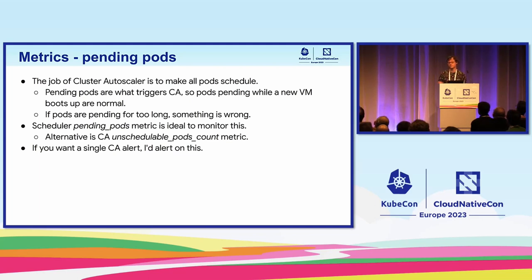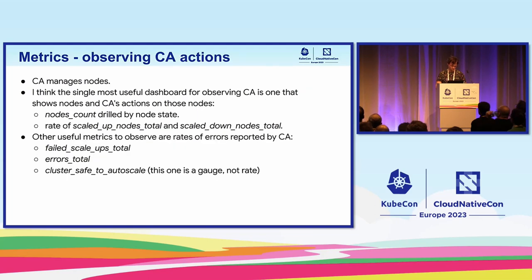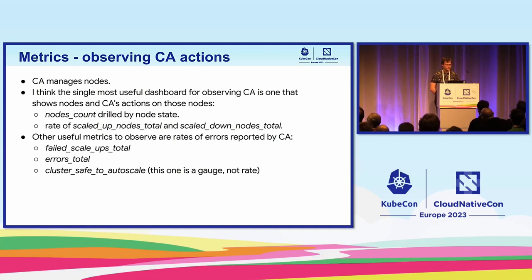If you just want a single alert for Cluster Autoscaler, I think that's the best one. I'd also recommend alerting on the fact that Cluster Autoscaler is running. There are many more Cluster Autoscaler metrics, but I'm going to focus on about four others — using three graphs as I go through different issues. In addition to pending pods, I think a super useful graph shows nodes in the cluster by different state, combined with the rate of scale-up and scale-down done by Cluster Autoscaler.